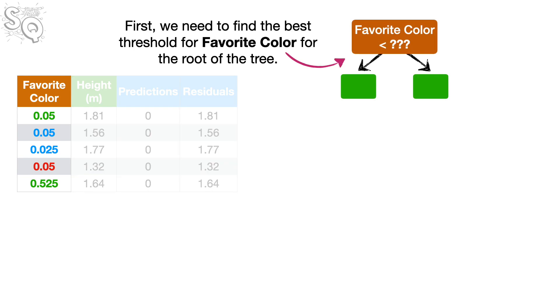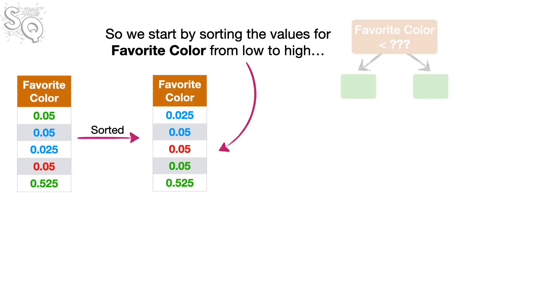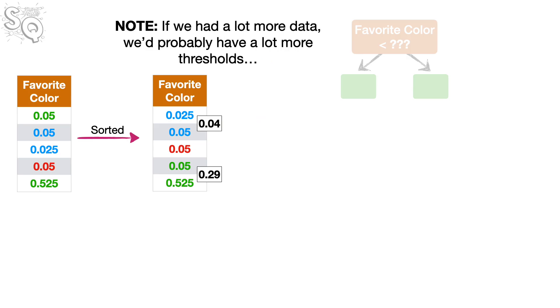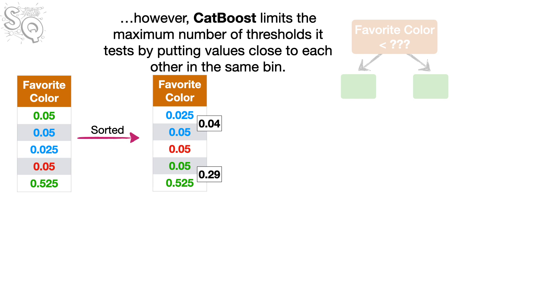Now that we have residuals, we can start to build a tree. First, we need to find the best threshold for favorite color for the root of the tree. So we start by sorting the values for favorite color from low to high, and that helps us identify two potential thresholds to try. 0.04, the value halfway between 0.025 and 0.05, and 0.29, the value halfway between 0.05 and 0.525.